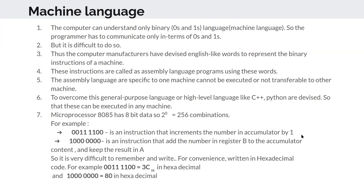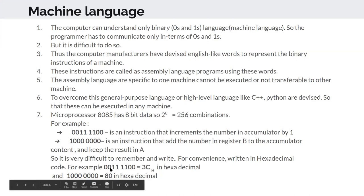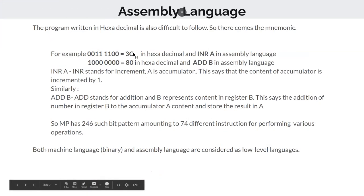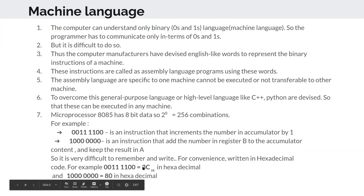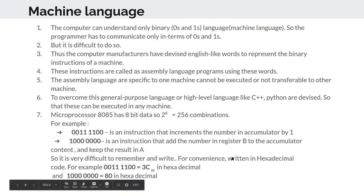For example, the 8-bit pattern '00111100' represents an instruction that increments the number in the accumulator. In hexadecimal, this is written as '3C'. So when entering data you enter '3C', which gets converted into binary that the microprocessor can decode and execute. This is how binary instructions map to hexadecimal codes.